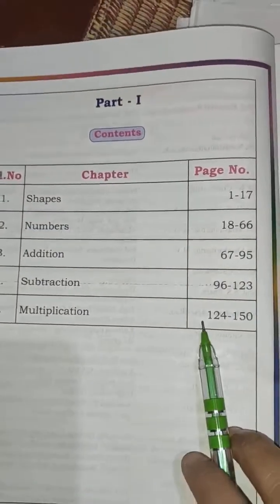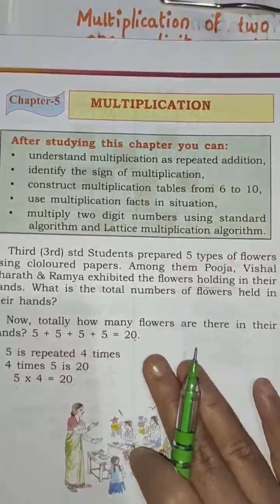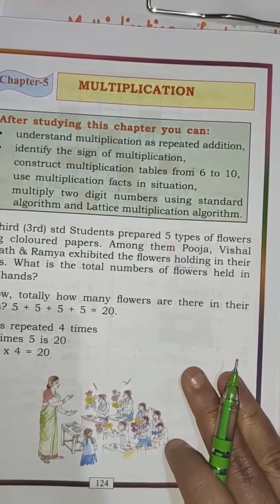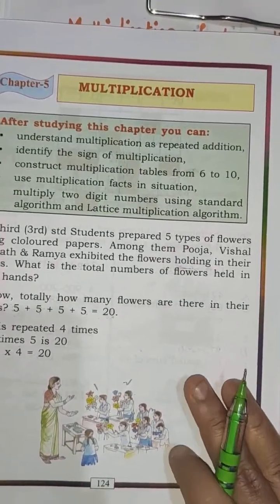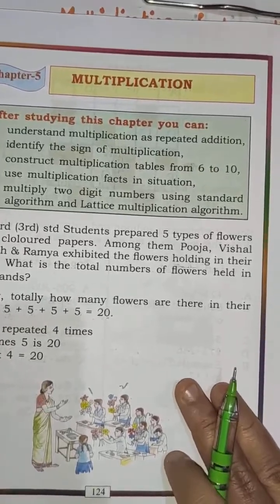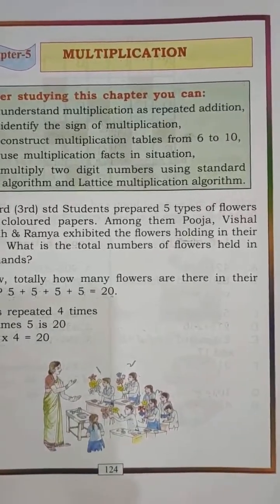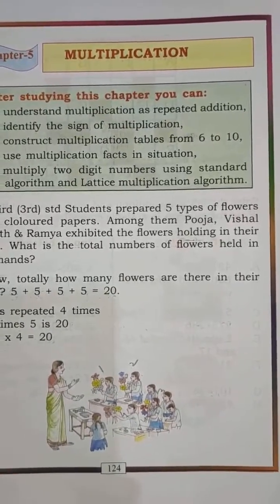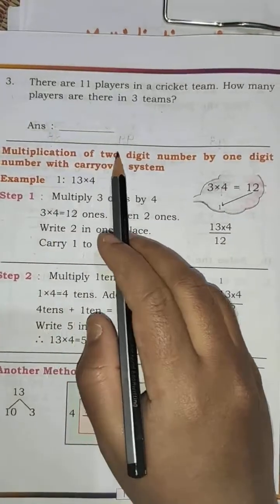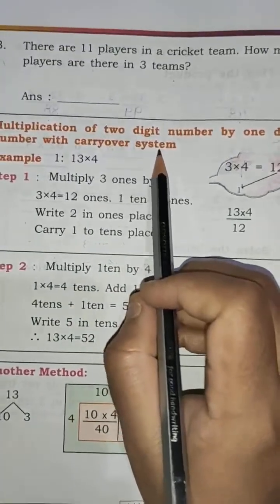So open page number 124. In the previous class you have learned multiplication as repeated addition, and you have learned the sign of multiplication, and you learned the tables. Today in this class we are going to start with another new topic: multiplication of two-digit number by one-digit number with carryover system.